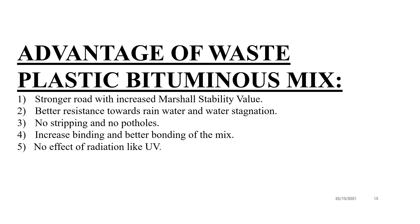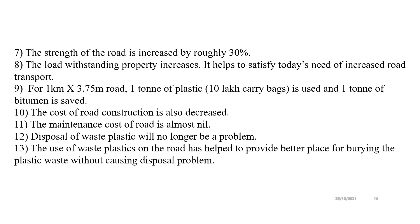The advantages of plastic bitumen roads include stronger roads with increased Marshall Stability as seen in the previous chart, no stripping, no potholes, and increased binding. There is no effect of UV radiation. The strength of the road is increased by roughly 30% as per the study of CPCB, and the load-withstanding property increases. It helps satisfy today's need for increased road transport. For 1 km length, 3.7 m width, and 3 cm height, 1 ton of plastic is used and 1 ton of bitumen is saved, reducing the cost of road construction by around 40,000 to 50,000 rupees for those dimensions. The maintenance cost of the road is almost nil, and disposal of waste plastic will no longer be a problem.